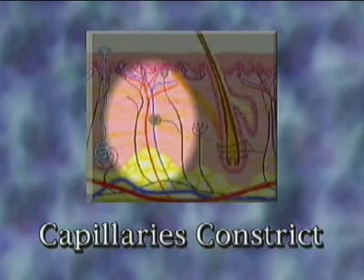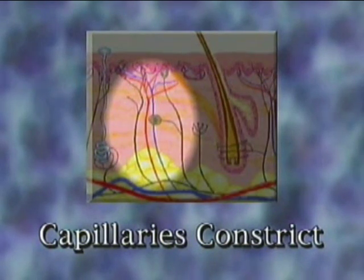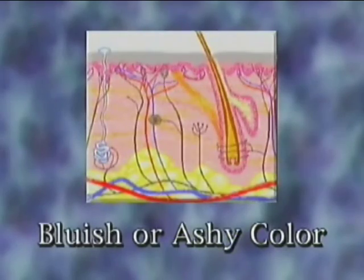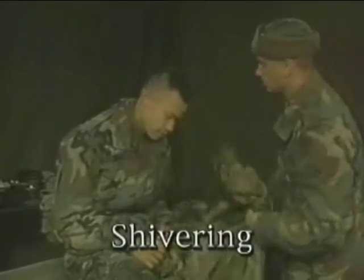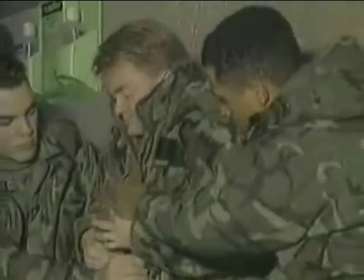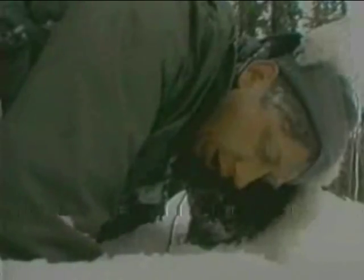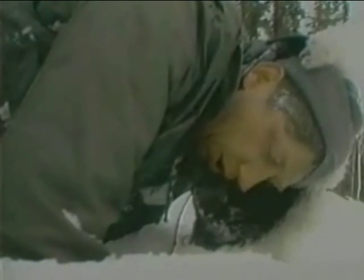Once body core temperature starts to drop, the body will begin to defend itself. Capillaries and smaller vessels near the surface of the skin will constrict to keep blood from contacting the cooler skin, giving the skin a bluish or ashy color. Shivering will usually be the next symptom — the body's attempt to produce heat through muscular contraction, progressing from mild to violent. As muscles cool and stiffen, muscular coordination is lost. Speech will become slurred as mental faculties and judgment begin to slow. As the blood cools and thickens, the pulse will become weak and irregular. Unconsciousness may be only minutes away due to hypoxia.